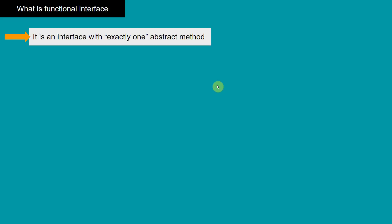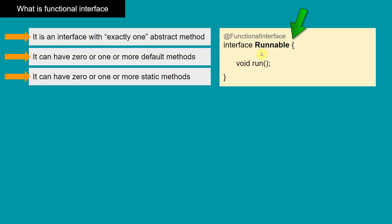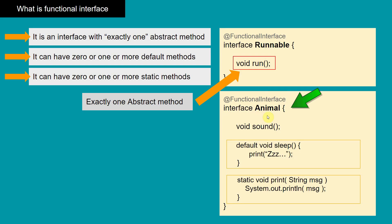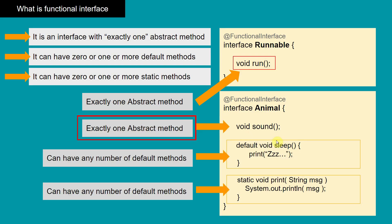So these are the two locations where we need to use functional interfaces. Now, what is a functional interface? An interface that has exactly one abstract method is a functional interface. It can have any number of default or static methods. For example, the Runnable interface has only one abstract method, so it's a functional interface. Similarly, an Animal interface with only one abstract method and additional default and static methods is also a functional interface — we only care about the abstract method count.